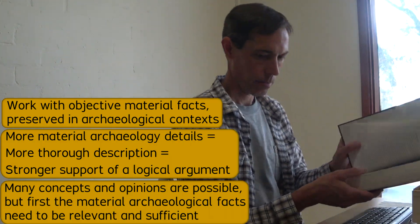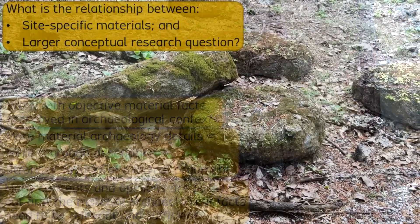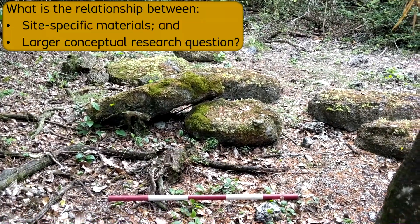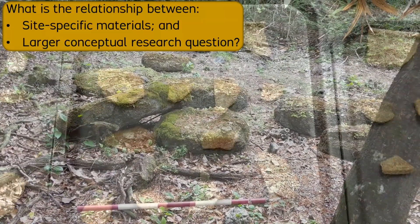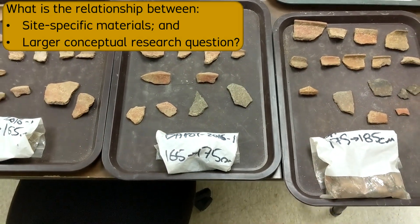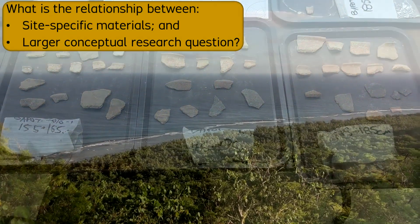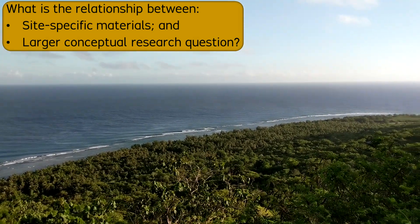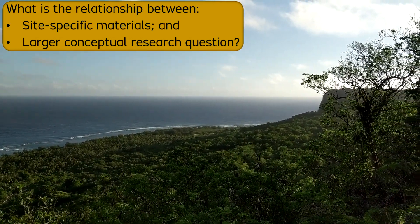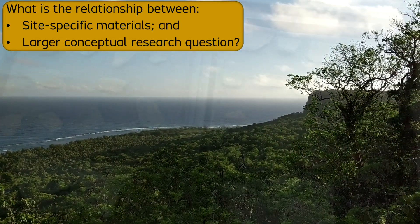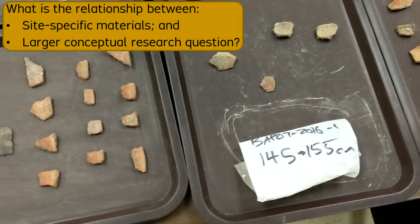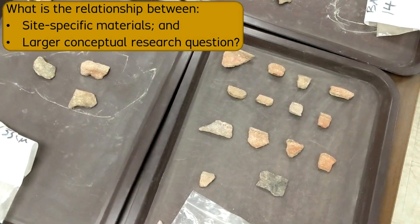You can consider other examples of research themes. You may be interested in studying the social structure reflected in house ruins, the combined technical and artistic choices that created diverse pottery traditions, or the different land use strategies that resulted in variable landscape systems. In all of these examples, you should be able to identify the site-specific material archaeological records that can relate with the intended research theme.